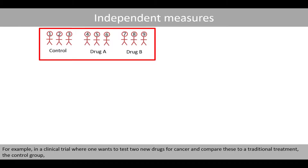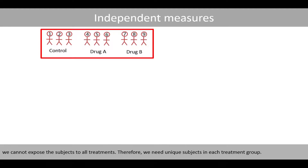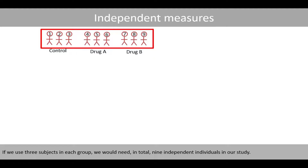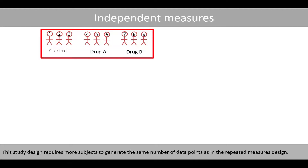For example, in a clinical trial where one wants to test two new drugs for cancer and compare these to a traditional treatment — the control group — we cannot expose the subjects to all treatments. Therefore, we need unique subjects in each treatment group. If we used three subjects in each group, we would need in total nine independent individuals. This study design requires more subjects to generate the same number of data points as in a repeated measures design.